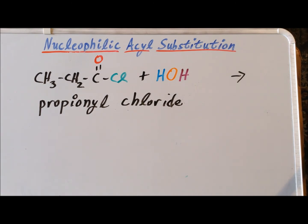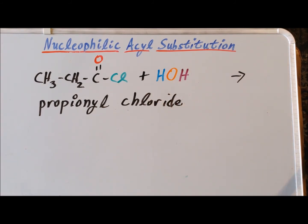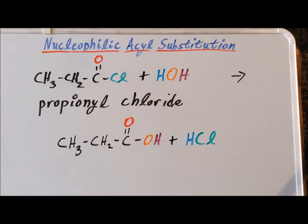Our third reaction involves propionyl chloride, which is the acid chloride with three carbon atoms, being hydrolyzed by H2O water. The products of the reaction, as we expect, are the carboxylic acid, propionic acid, and hydrogen chloride gas. Please see the following figures showing the reactants, the products, and the computed transition state for the hydrolysis of propionyl chloride.